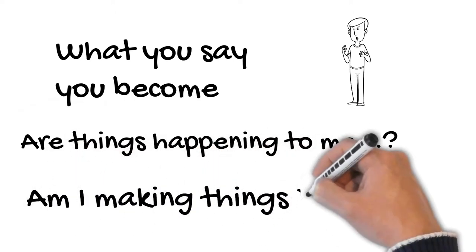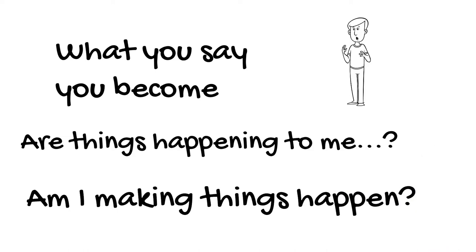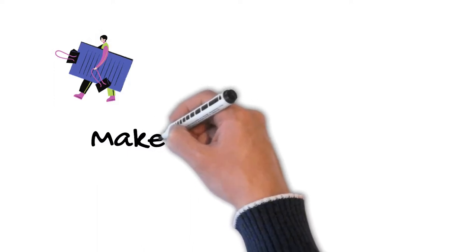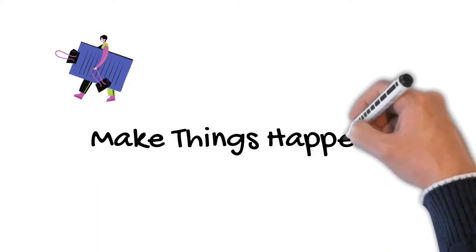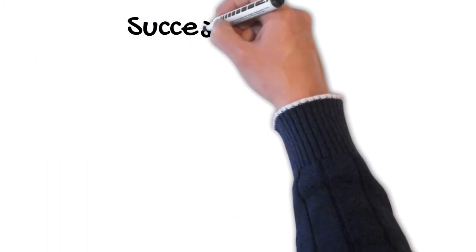You need to take full responsibility for what happens to you and start focusing on making things happen. He talks about how it's actually quite easy to become successful. You simply need to find someone who's done it and you need to just replicate exactly what they've done and turn it into a process.